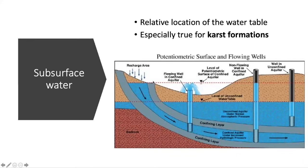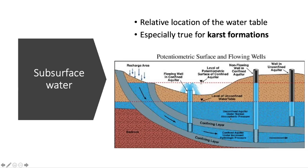The next metric is subsurface water. The relative location of the water table is important in determining how much weathering is going to take place. If the water table is really close to the surface, it doesn't take much for there to be flooding on the surface. If the water table sits really deep underground, whenever precipitation hits the surface, it's going to be sucked right in and go deep underground down into the aquifer. We're going to talk more about this when we get to karst formations, but for right now subsurface water is an important driver of weathering, especially for karst landscapes.